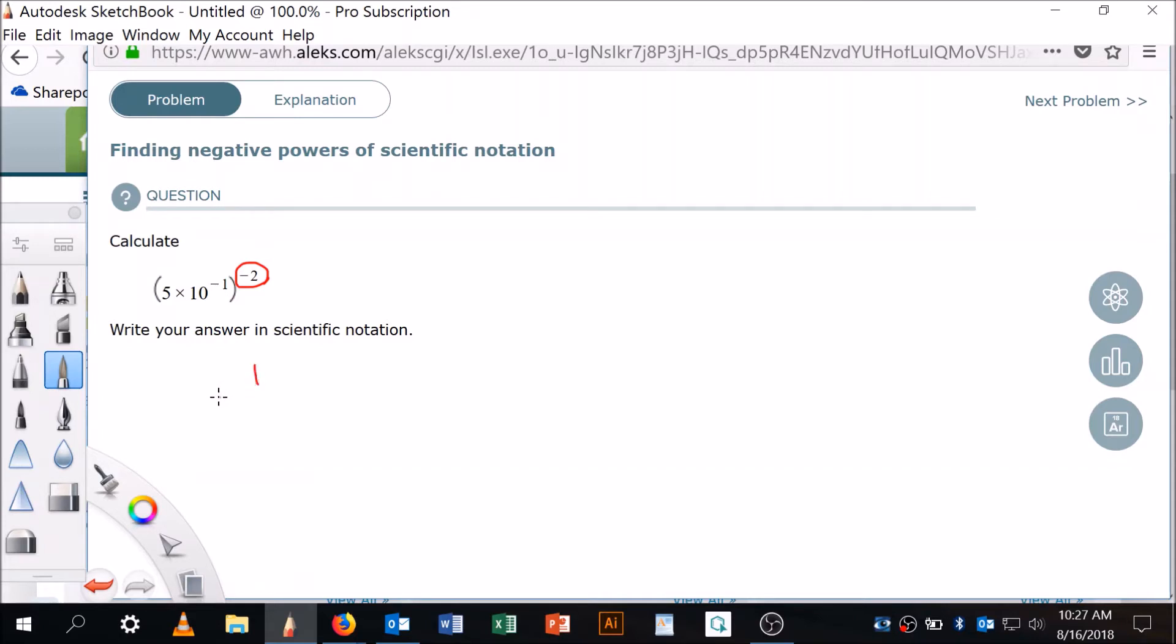So a negative exponent, I'm going to make that a positive exponent by rewriting the whole thing: five times ten to the negative one, squared. You see what I did, I just switched and flipped everything over.